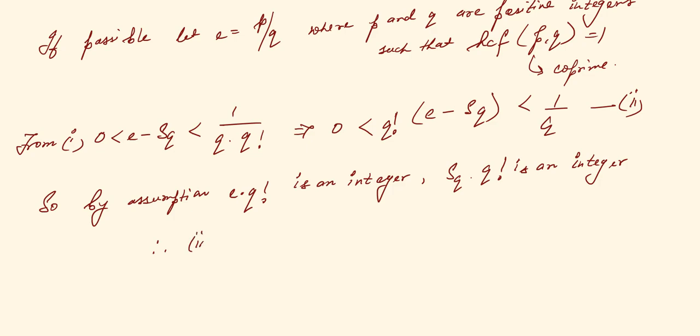Equation 2 shows that there exists an integer between 0 and 1, which is impossible. This shows that there lies an integer between 0 and 1, which is impossible.